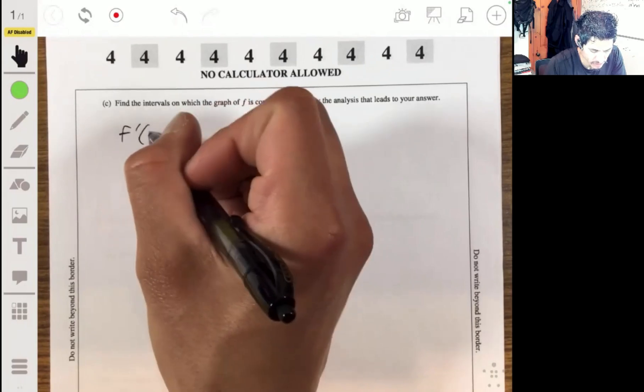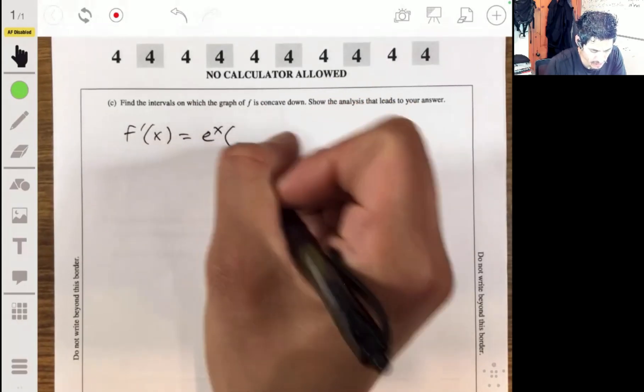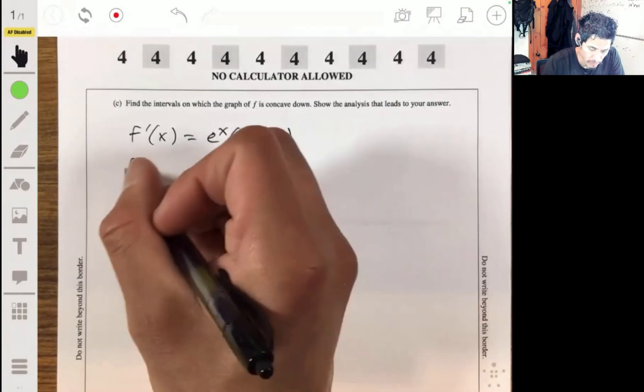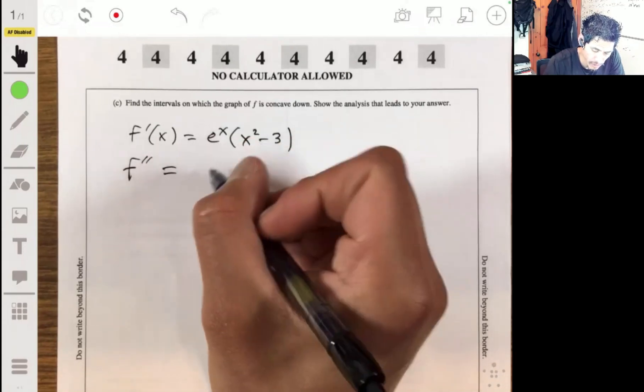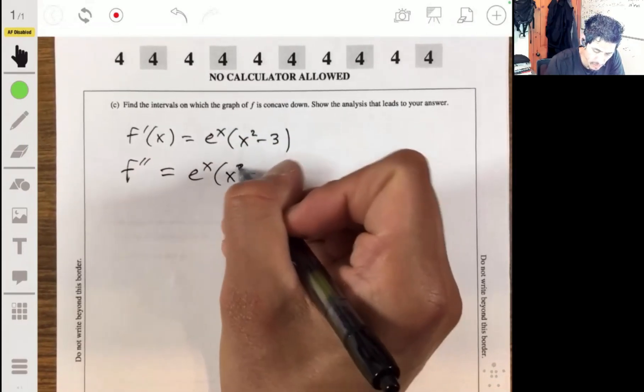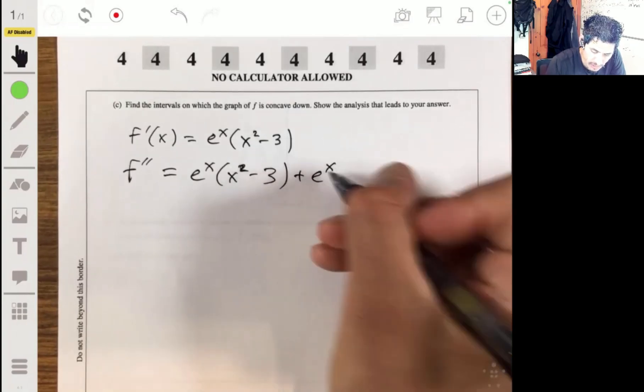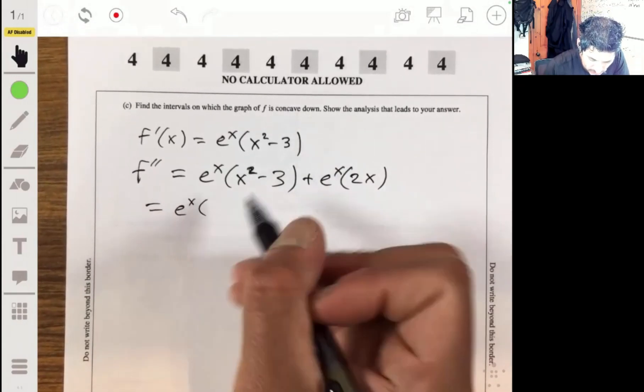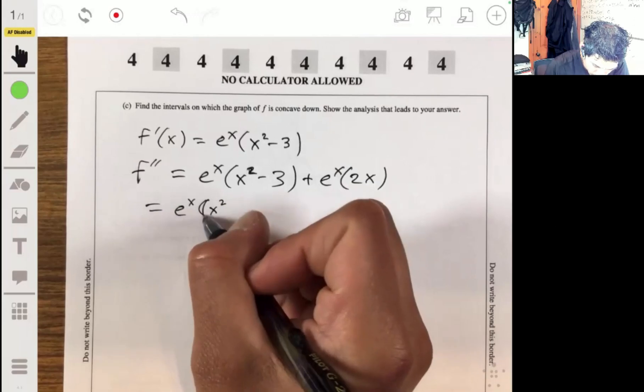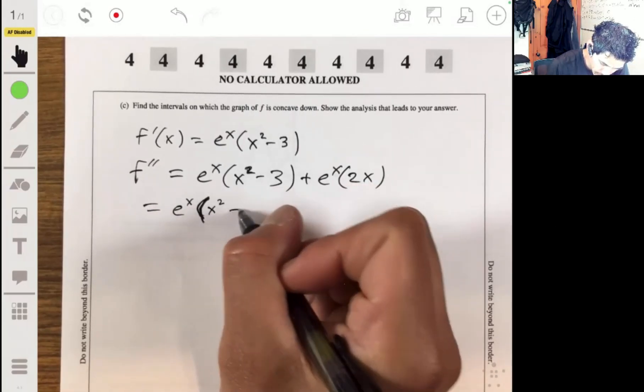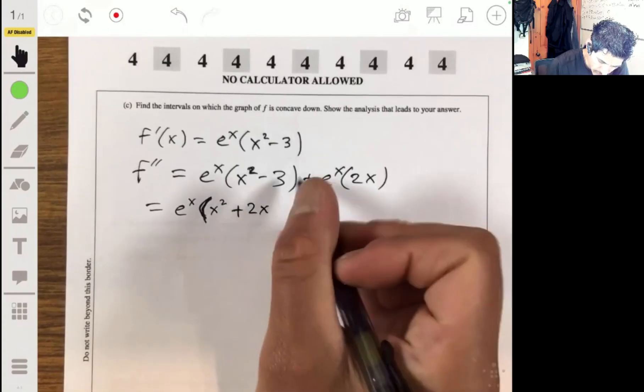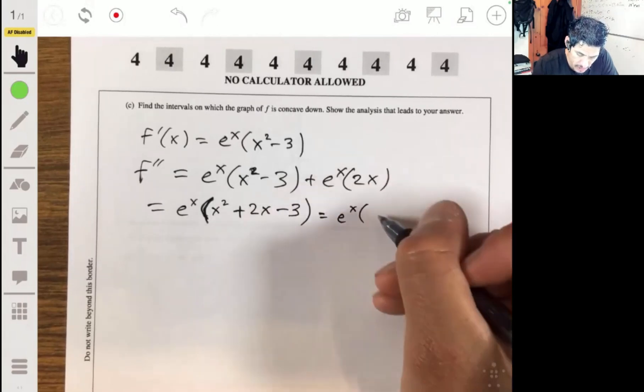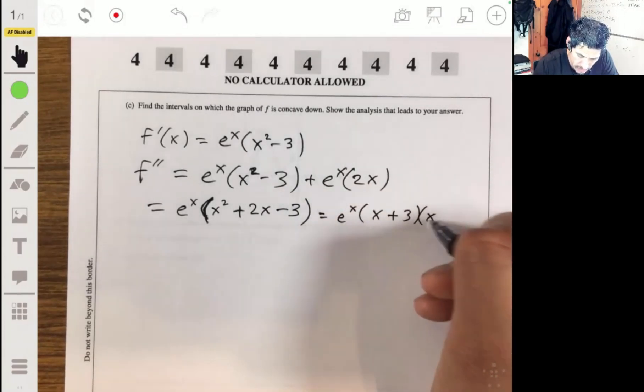So again, f prime of x is equal to e to the x times x squared minus 3. So f double prime will be e to the x times x squared minus 3 plus e to the x times 2x. Using product rule, factor out e to the x. x squared plus 2x minus 3. This is the same as e to the x times x plus 3 times x minus 1.